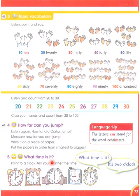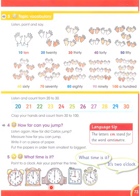What time is it? It's two o'clock. What time is it? It's ten o'clock. What time is it? It's six o'clock. What time is it? Nine o'clock. What time is this? This is four o'clock.